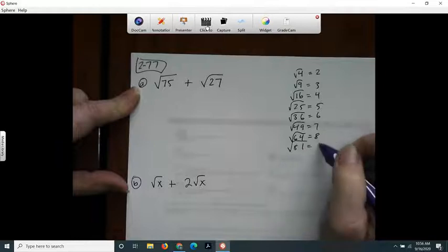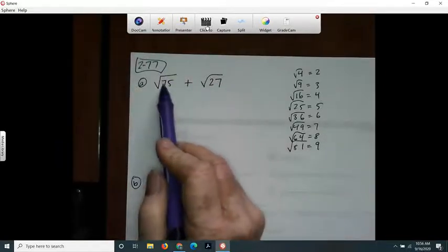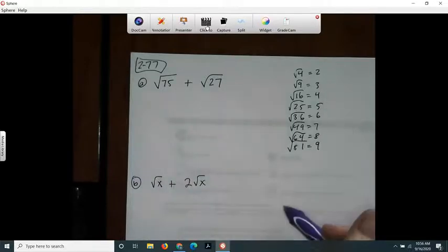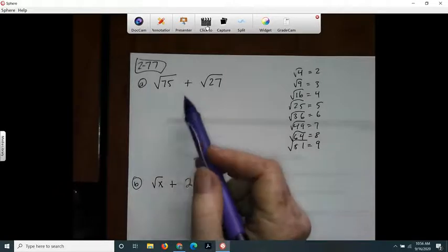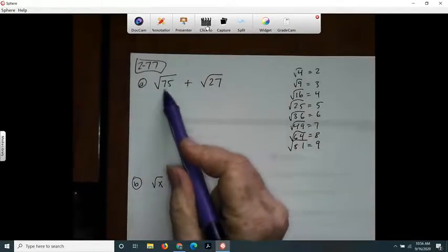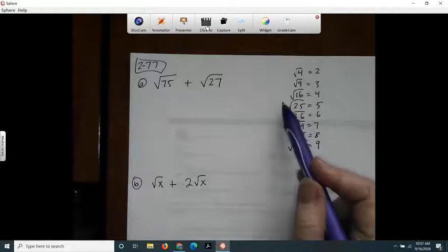I'm going to look for perfect squares. I'm going to try to break these into perfect squares, because if I can, then I can simplify them. So 75, I'm looking for a perfect square that divides evenly into 75, and I know 25 would be the good perfect square.